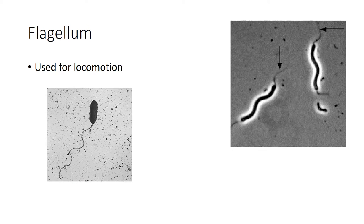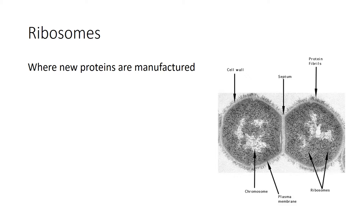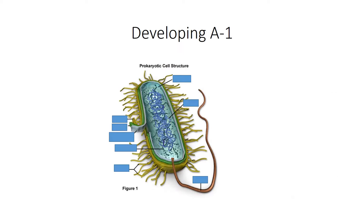The flagellum is used for locomotion — think of it like kicking in a pool, whipping back and forth to propel the bacteria like a flipper. These bacteria are not very graceful but can generally move in the direction they want. Ribosomes are very small and the cell has lots of them, because proteins wear out and must constantly be replaced, so there's a lot of protein manufacturing happening.